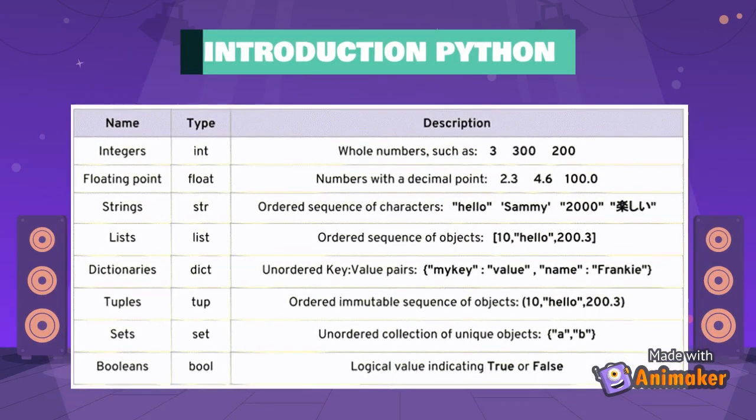The following are data types in Python. Integer is for numbers. Floating point or float is for decimal numbers. String is for sentences or characters. List is for sorting or sequences. Dictionary is for an unordered collection of data values. Tuple is to sort an immutable order of objects. Set is an unordered collection of unique objects. And the last one, Boolean is for logical value.